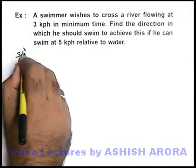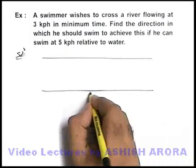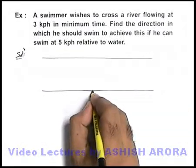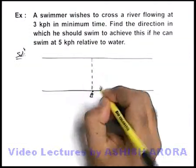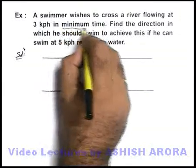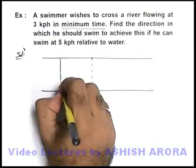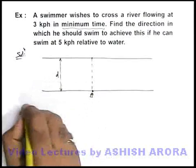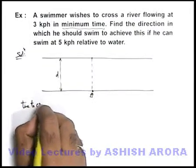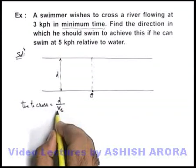Let's draw the physical situation here. If this is the river, at one bank of the river the swimmer is there, and he wants to reach the other bank in minimum time. We know that if the width of the river is d, the time to cross can be written as d divided by v_c, where v_c is the crossing velocity.